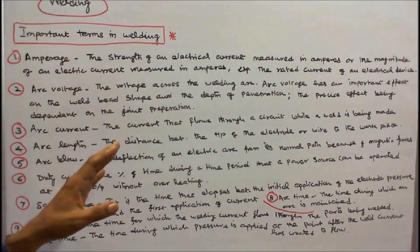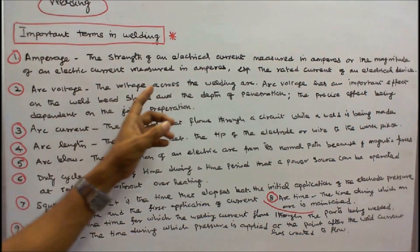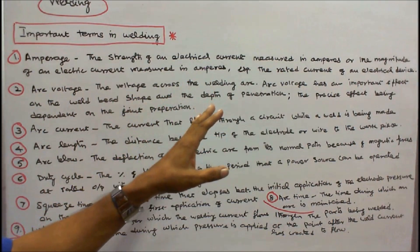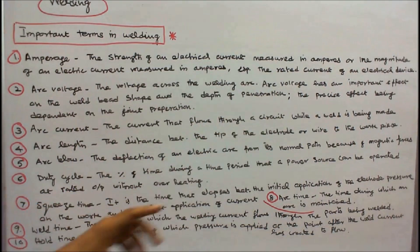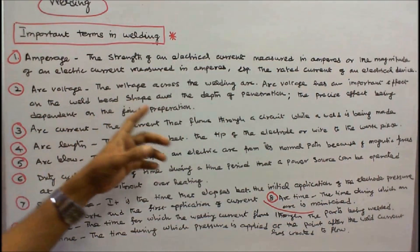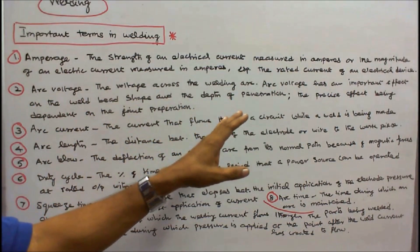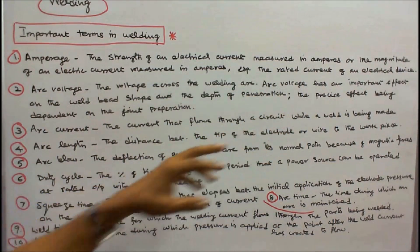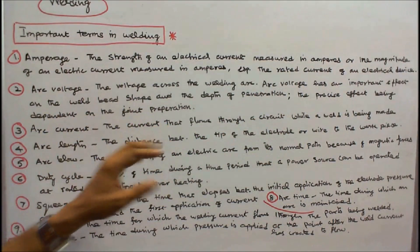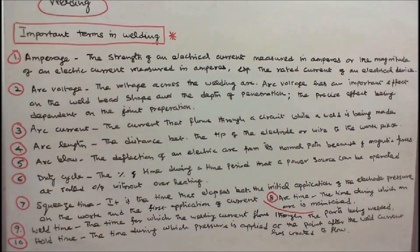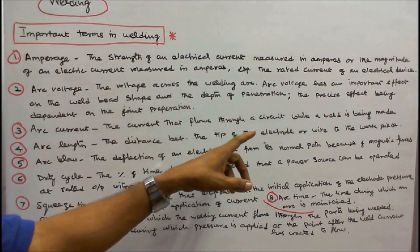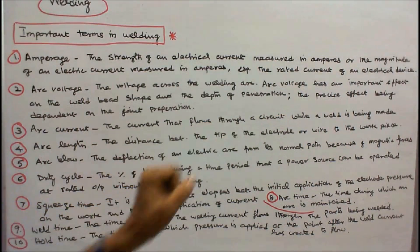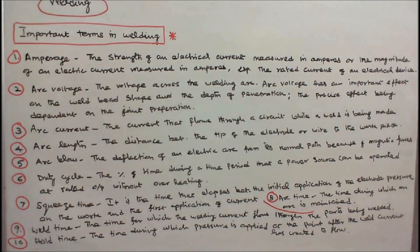Arc voltage: the voltage across the welding arc. Arc voltage has an important effect on the weld bead shape and the depth of penetration, the precise effect being dependent on the joint preparation. Arc current: the current that flows through a circuit while a weld is being made.